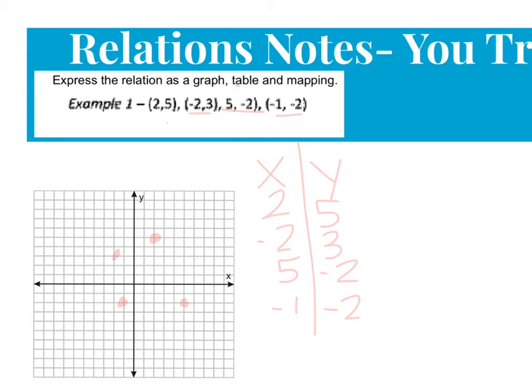All right, so a mapping is the one that you want to make sure that you're putting your x's in order. So let's do that. So I've listed my x's, and let's go ahead and do the y's now. And I see that negative 2 is listed twice, so make sure you only put it in your mapping one time.